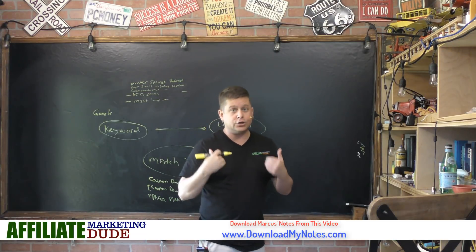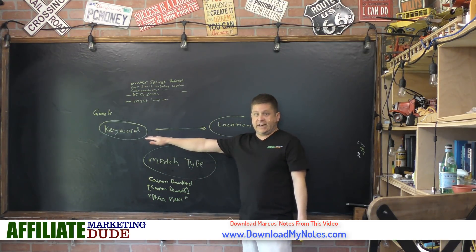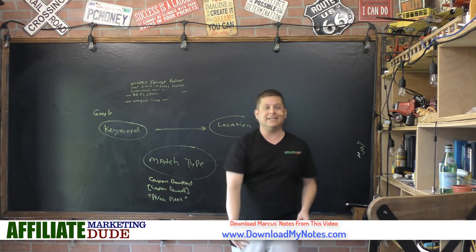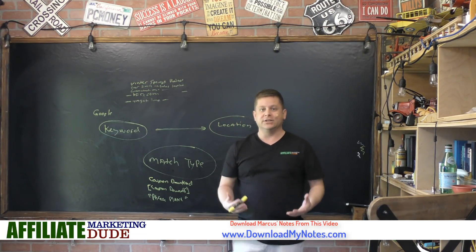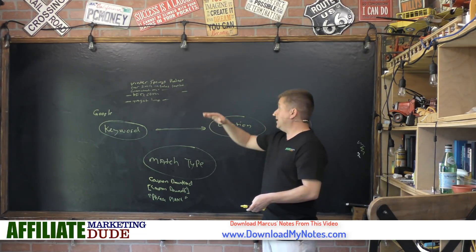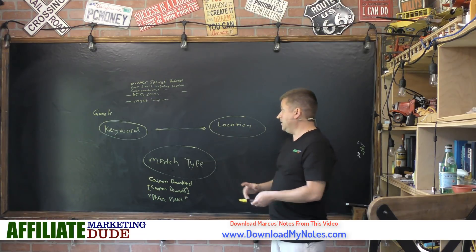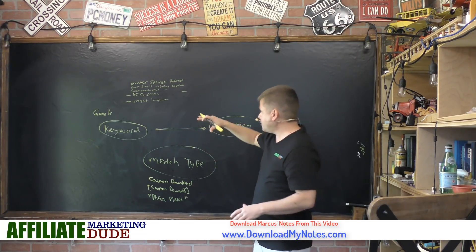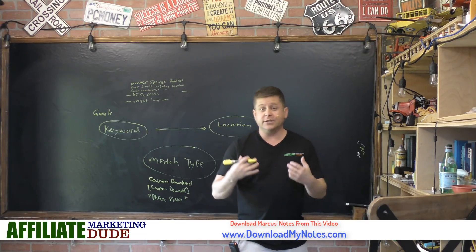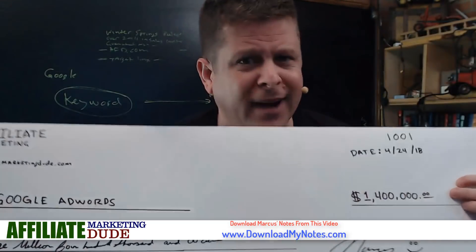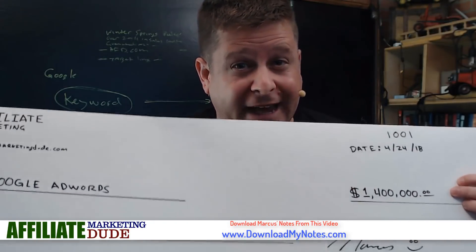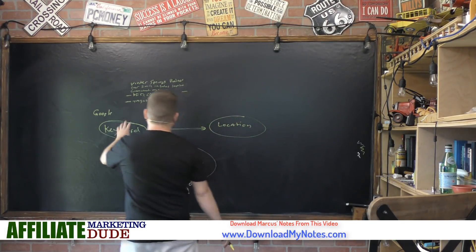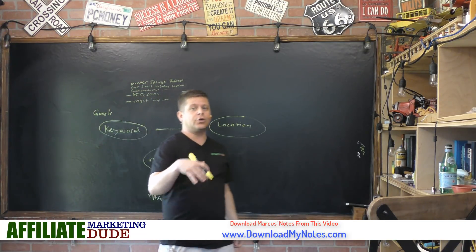So you control the keyword, the location, the match type, and what your ad says. If you have a product that costs a thousand dollars and you don't want people who can't afford it, you say 'X product — $1,000' right in the ad. You'll weed out people you don't want and focus on the ones you do. You also control the amount you pay. In the Google AdWords Keyword Planner you'll see a suggested bid — for example, 'Winter Springs Realtor' might suggest between 75 cents and four dollars.